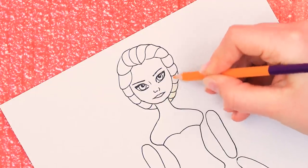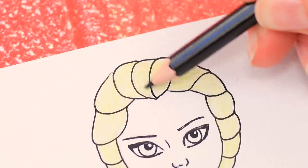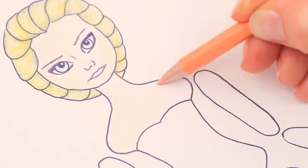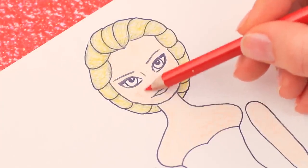Take colored pencils and shade Elsa's hair yellow. She's a natural blonde! Define shades with brown and add volume to the hair. Shade the face and the body with a beige pencil. Add some blush and shade the lips with a red pencil.